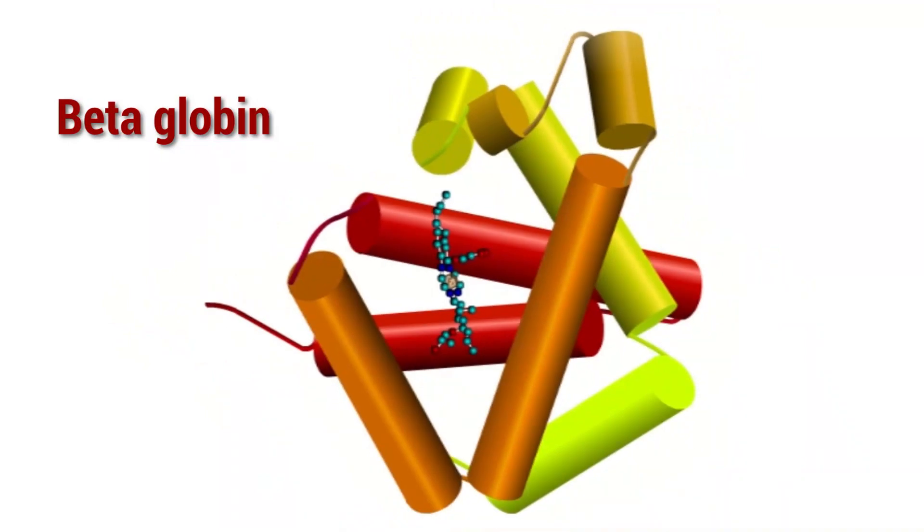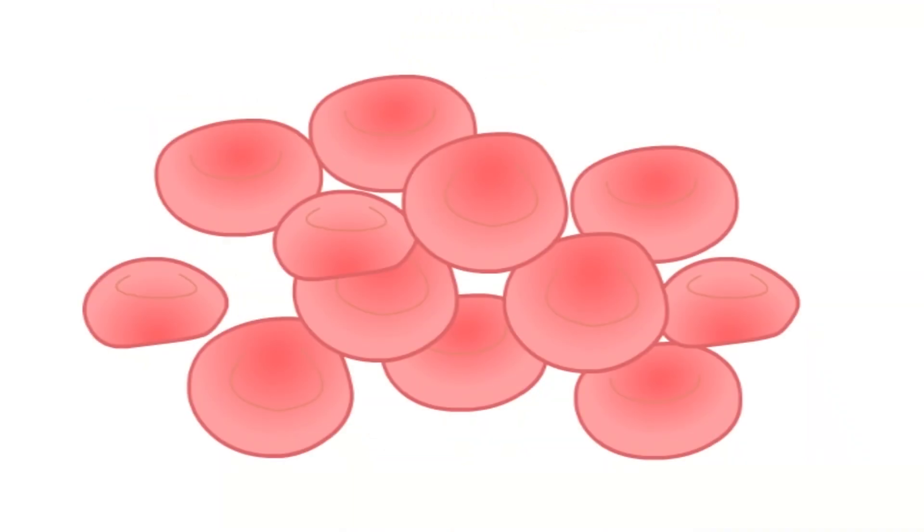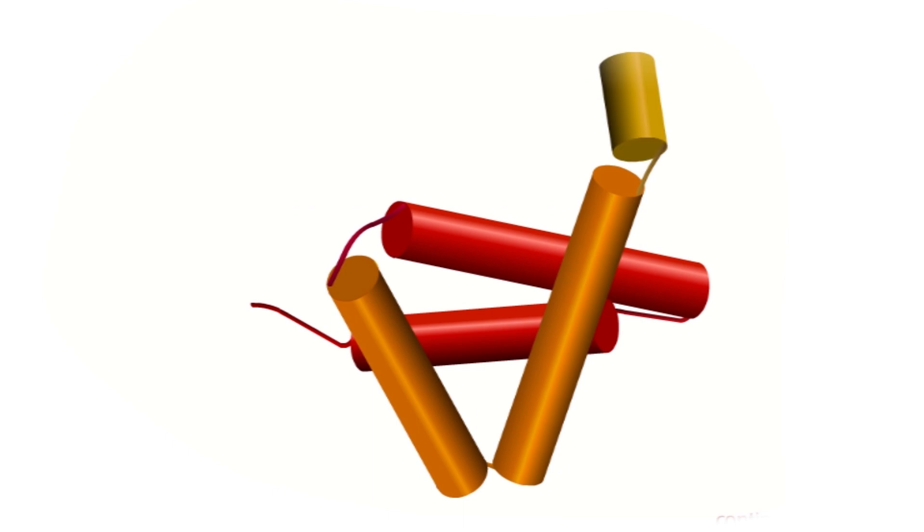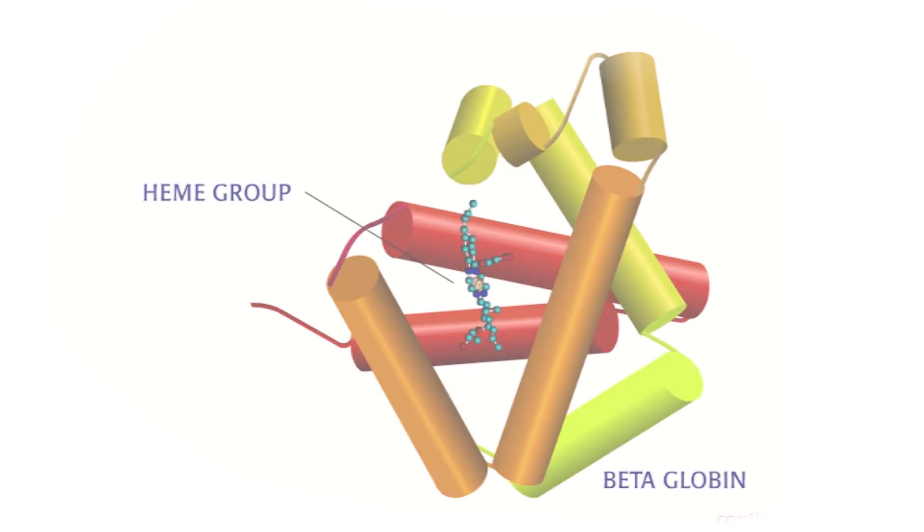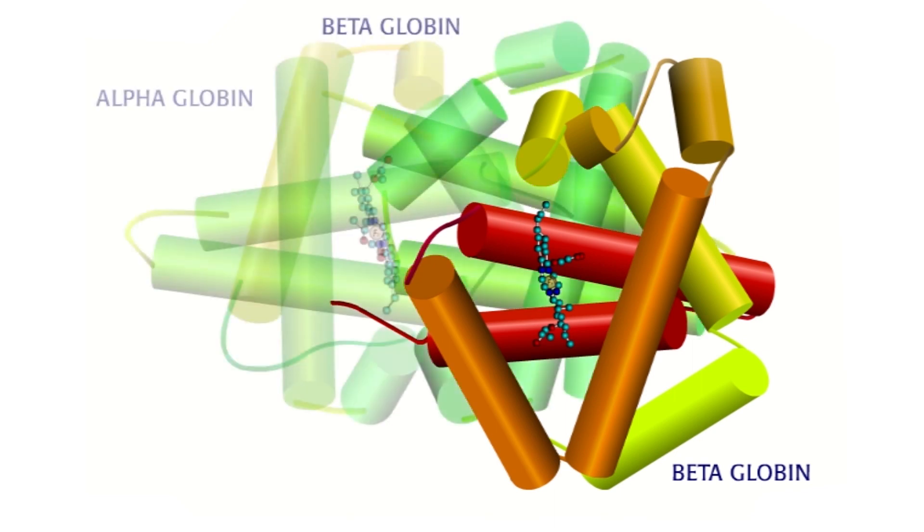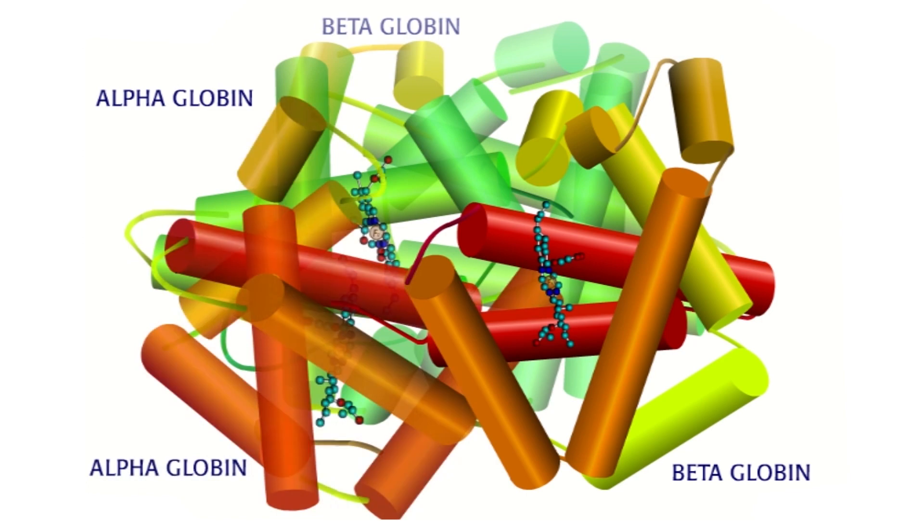Beta-globin, a molecule of hemoglobin, is affected in this disease. Beta-globin proteins are found inside red blood cells. These proteins carry another molecule called the heme group. Inside the red blood cell, two beta-globin and two alpha-globin proteins, along with each globin's heme group,